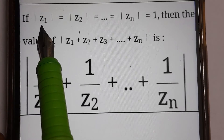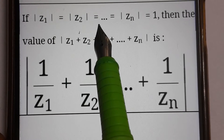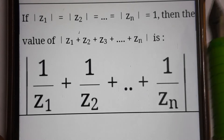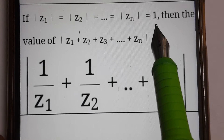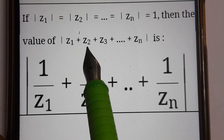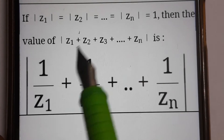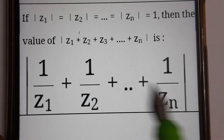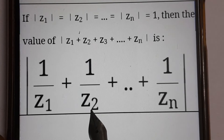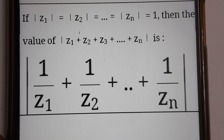If |z₁| = |z₂| = ... = |zₙ| = 1, then the value of |z₁ + z₂ + ... + zₙ| equals |1/z₁ + 1/z₂ + ... + 1/zₙ|.